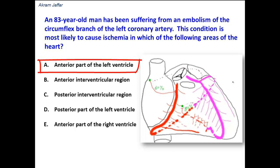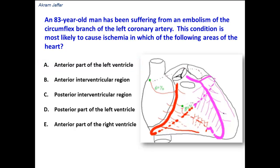Option A: Anterior part of the left ventricle. As you can see, the anterior part of the left ventricle forms a short strip to the left side of the anterior interventricular groove, and it is supplied by ventricular branches from the LAD, the left anterior descending artery, and not from the circumflex branch.